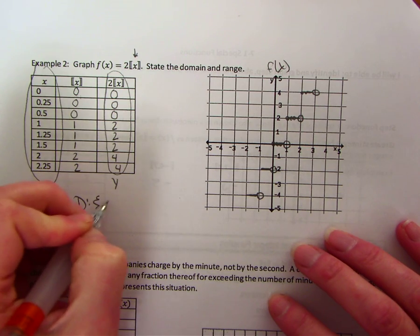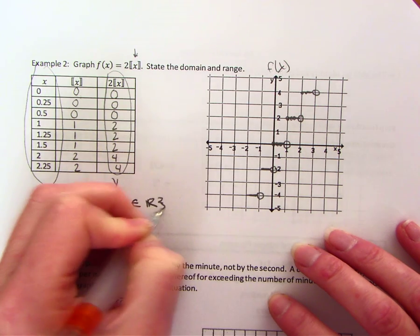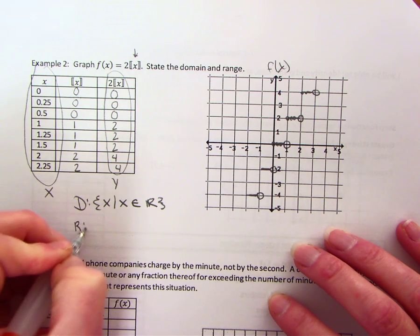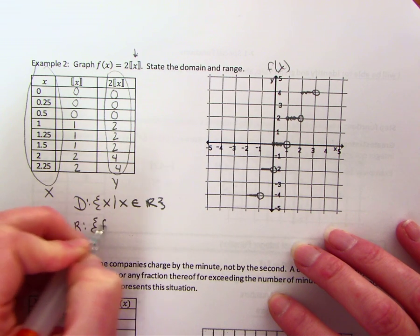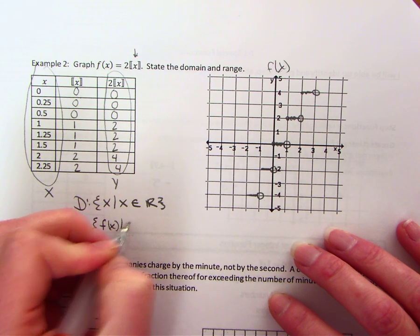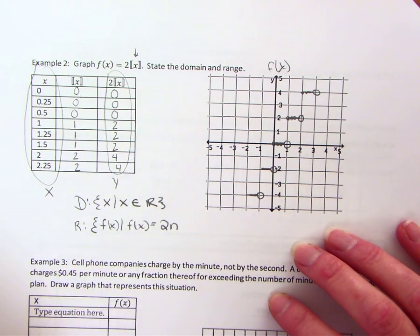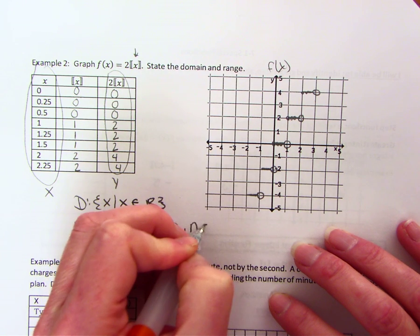For the domain again I can put in any x values, so x is an element of the set of all real. For my range, this one is a little more complicated. We don't have all integers, we have every other integer or all integers that are multiple of 2. So f of x is equal to 2n and n is an integer.